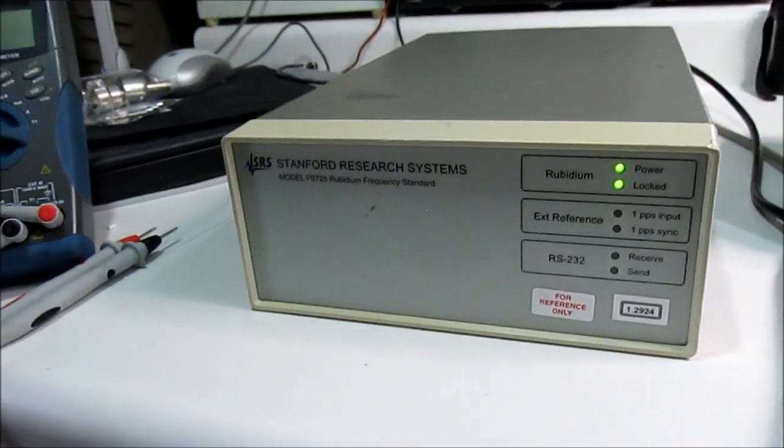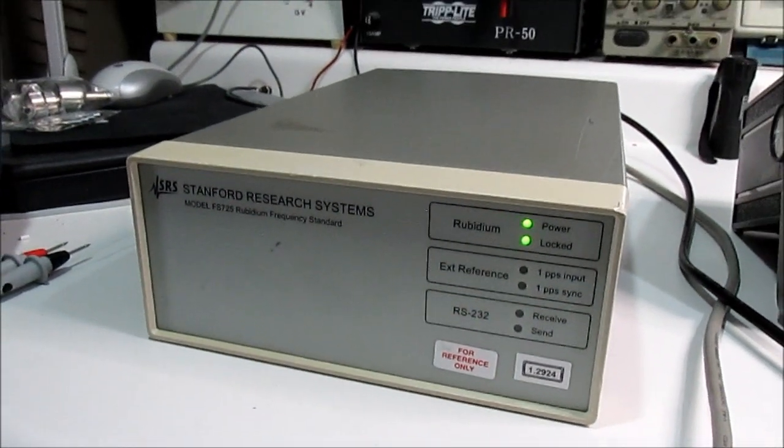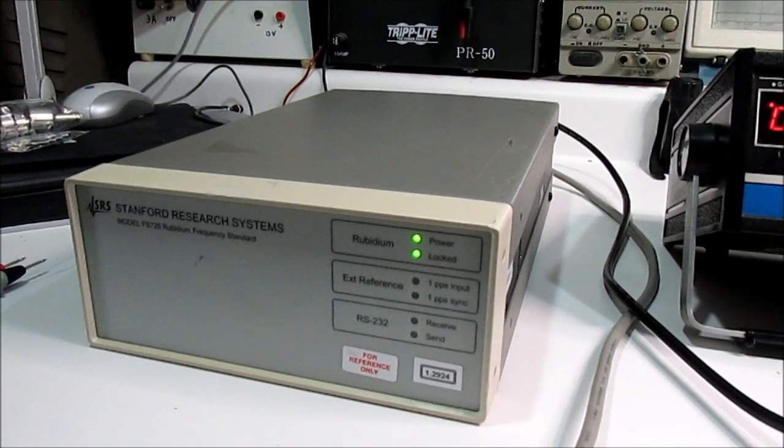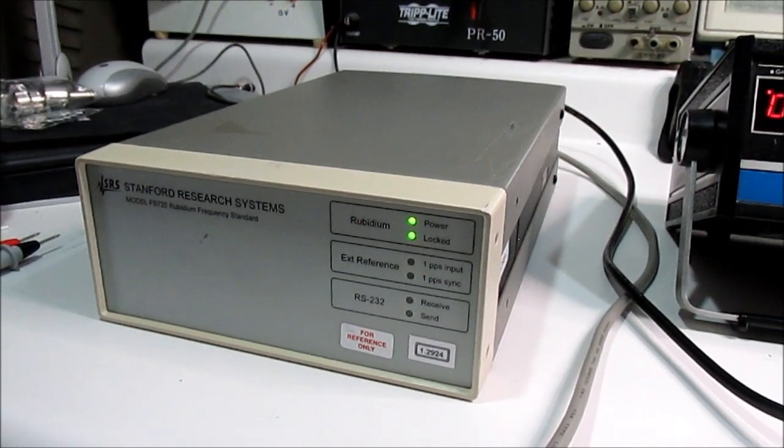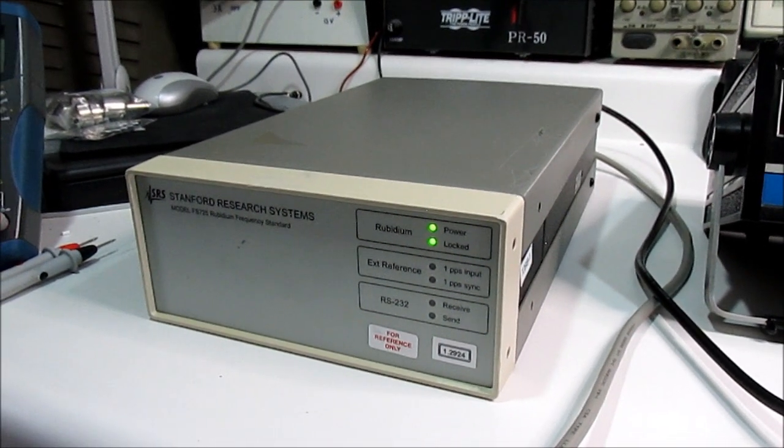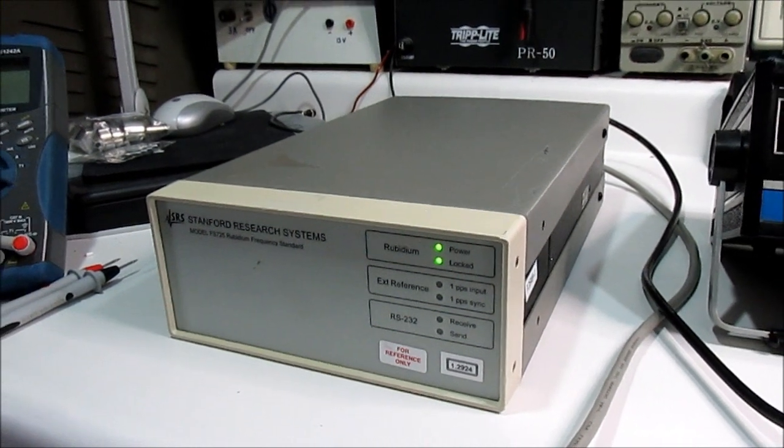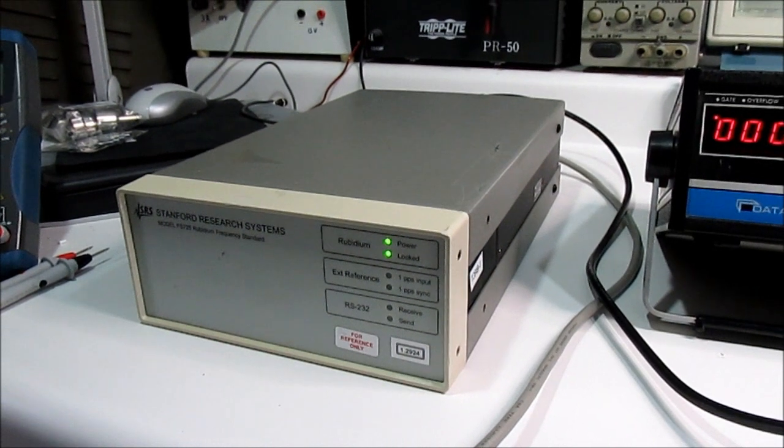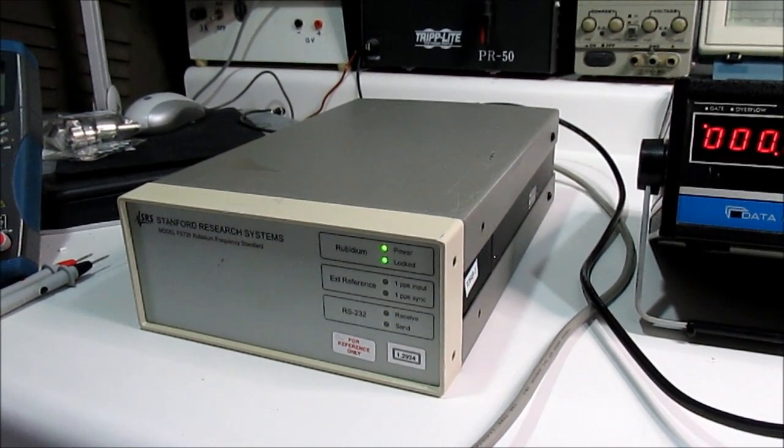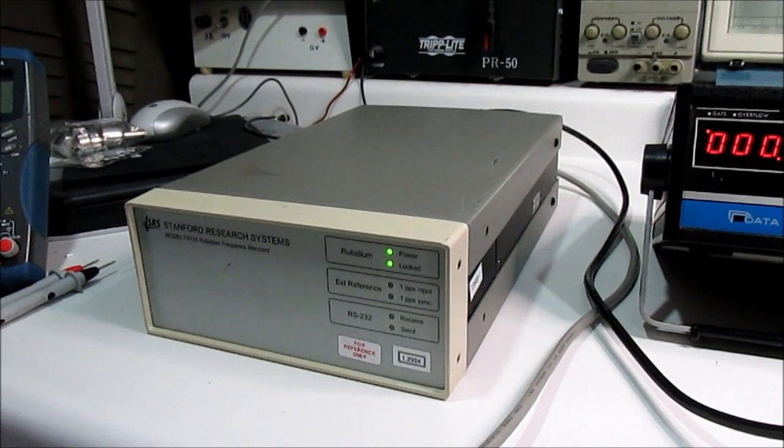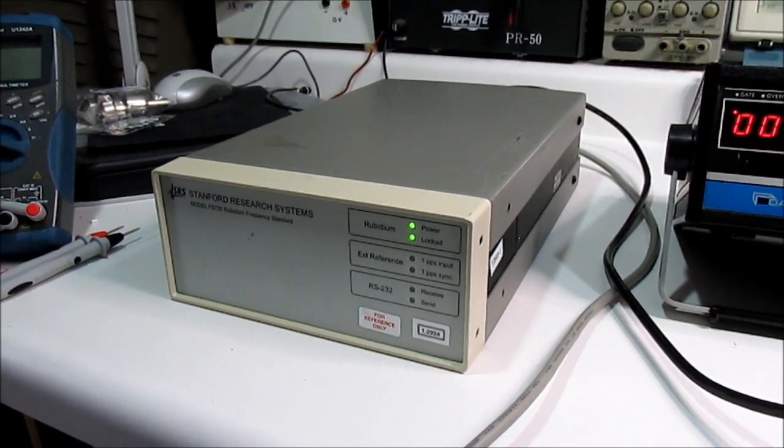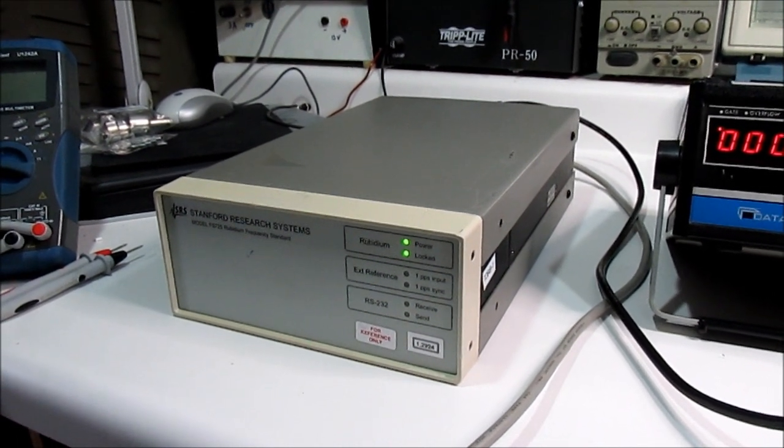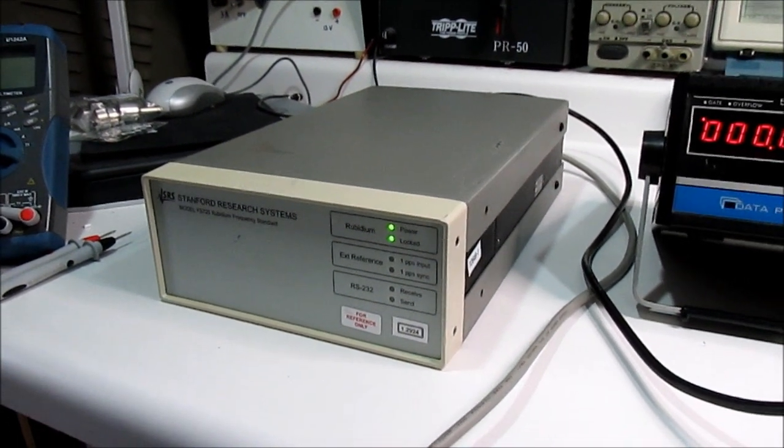All right, there you go checking out this Stanford Research FS725 rubidium frequency standard. I mean, at least compared to a couple other things it seems like it's working fine. But yeah, I found it in e-waste a few years ago and it's one of those things where, okay, you can use it occasionally to check stuff with, but don't really have a daily use for something like this. I'm assuming it was in some kind of cal rack at one point. Doesn't look like it's super old, but you know, probably 20 years old or something like that. All right, all for now with this one.